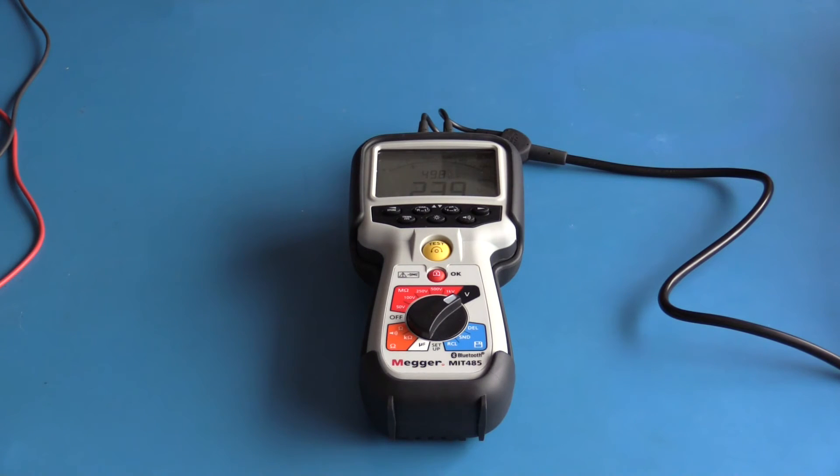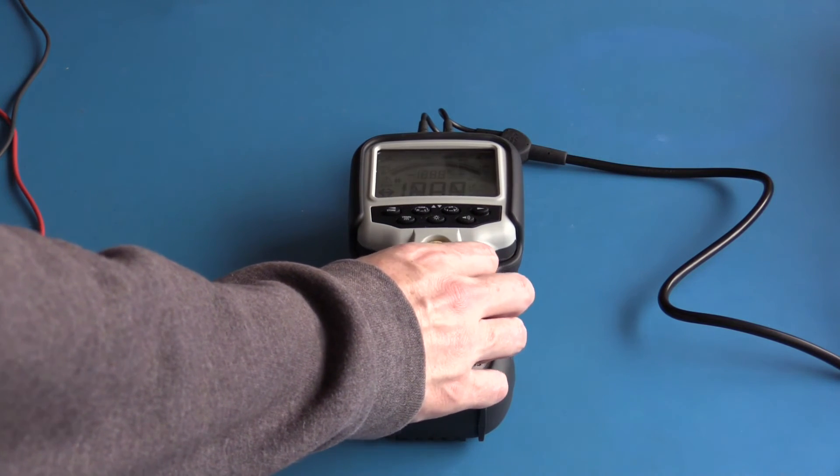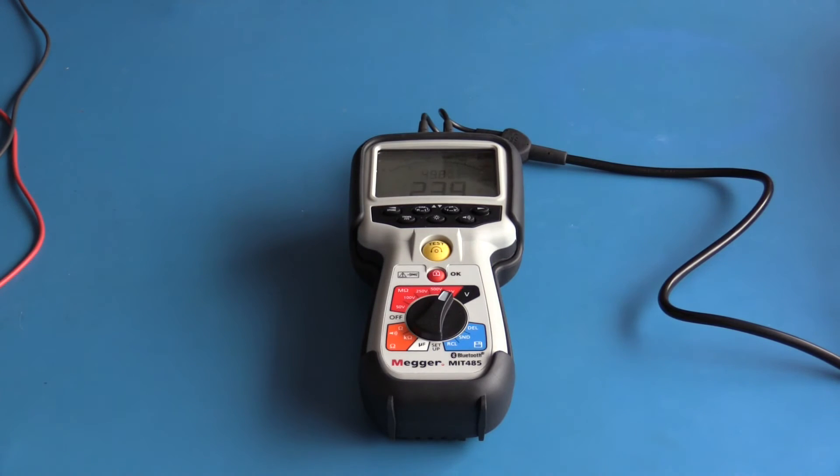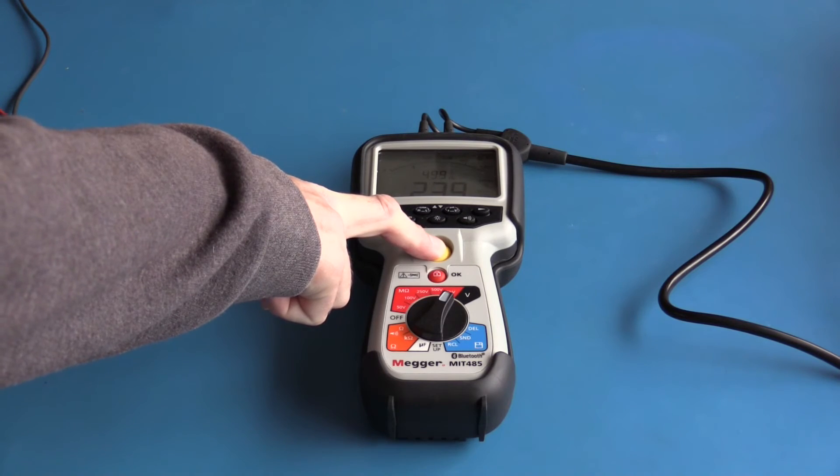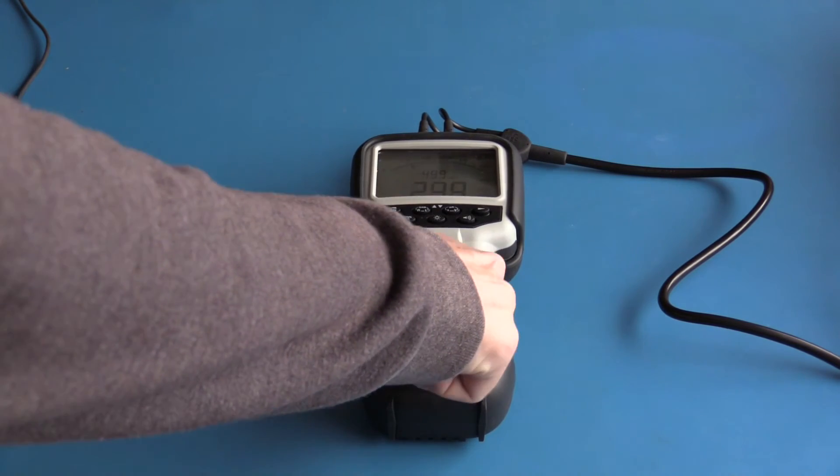With the meter on this live circuit, if I switch to another function, the meter will beep and alert me that this circuit is live. It also enables test lockout. As you could see, I was not able to perform the insulation resistance test.